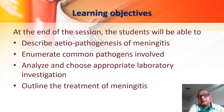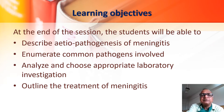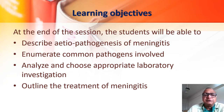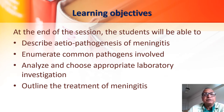By the end of this session, you should be able to: number one, describe etiopathogenesis of meningitis — what are the agents which cause meningitis and how it happens. Enumerate common pathogens involved; the list of common organisms which cause this disease, meningitis, you should be able to enumerate and remember. Then the laboratory diagnosis — you should be able to analyze and understand the laboratory investigation, diagnosis procedure, and choose the tests appropriately. And of course, a brief outline of the treatment of meningitis.